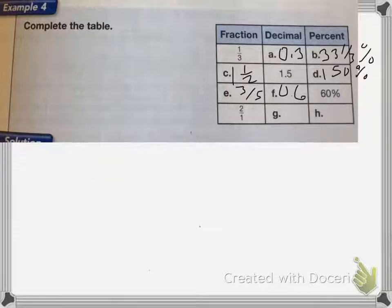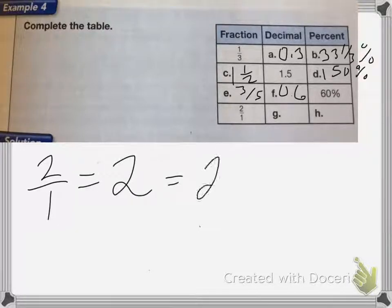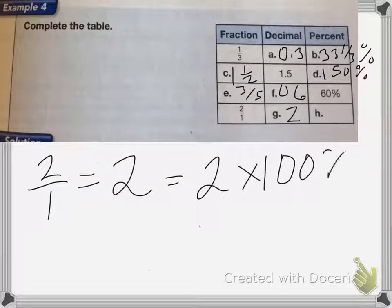On the last one, 2 over 1, writing that as a decimal, that's equal to just 2. So the decimal is going to be 2. And the percent is going to be 2 times 100%, which is equal to 200%.